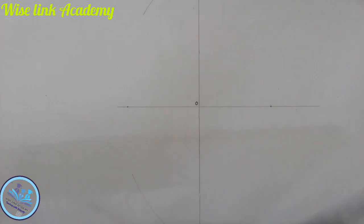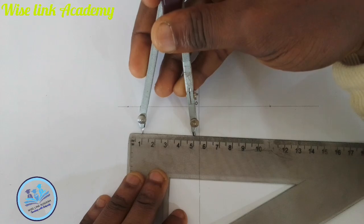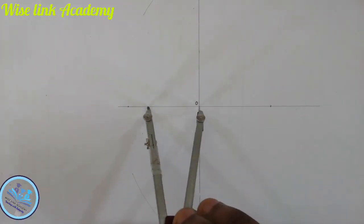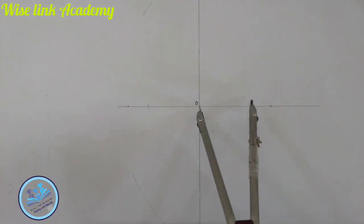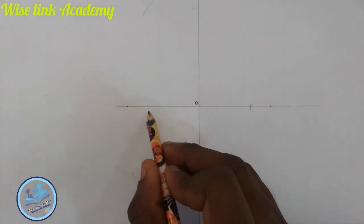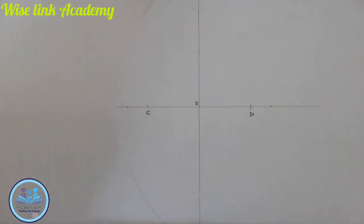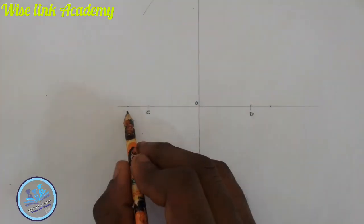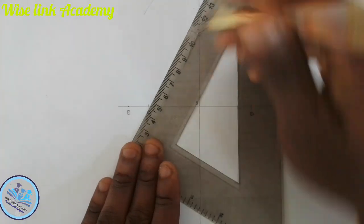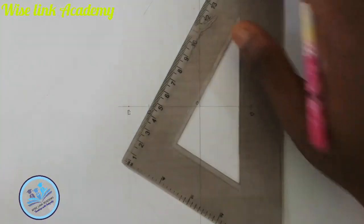Measure 4 centimeters from point O, place your compass at point O, strike an arc here. Similarly, come to this point and strike an arc here too. You will now have point C and point D. Next, cut this point — point E — just following the same procedure.